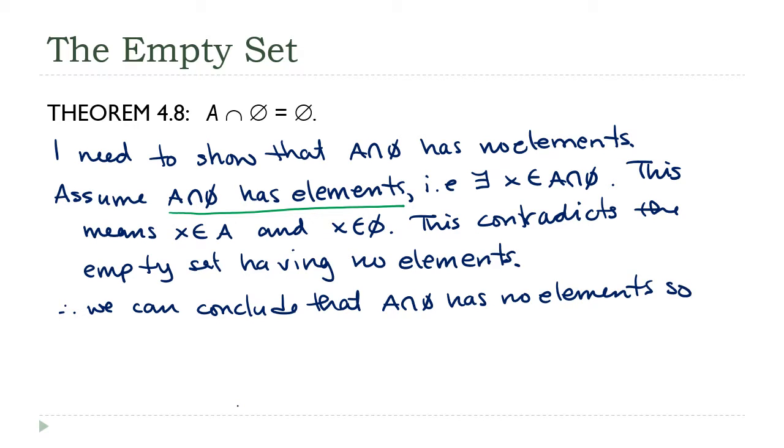So A ∩ ∅ is equal to the one and only empty set. There is only one, so that has to be equal to it, and that's what we wanted to show.